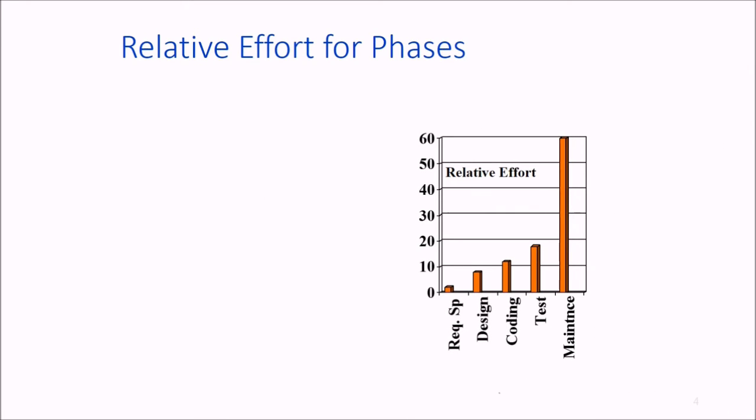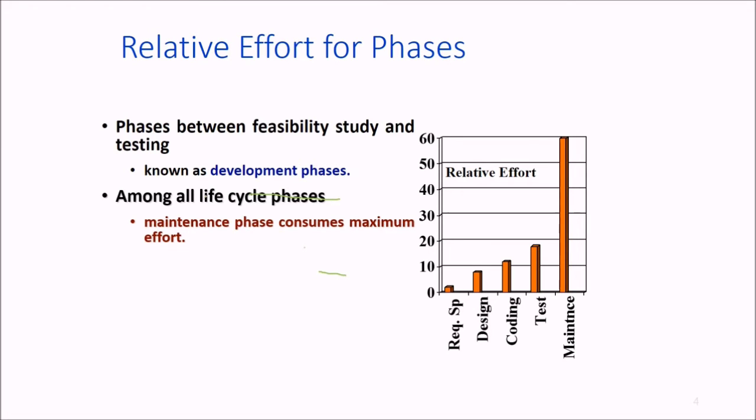The relative effort from requirement to maintenance: the phases between feasibility study and testing we call them as development phases. Among all these life cycle phases, the maintenance phase consumes the maximum effort. As evident from this bar chart, requirement specification takes very less effort while maintenance consumes the maximum effort. In development phases, testing consumes the maximum effort.